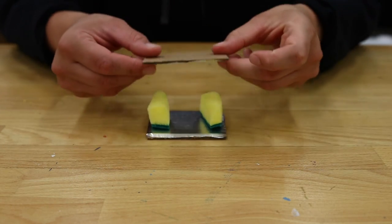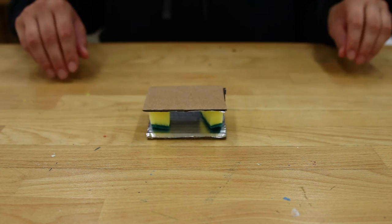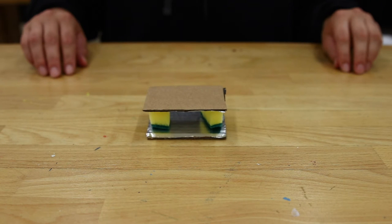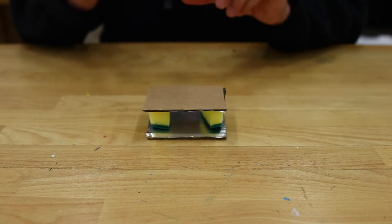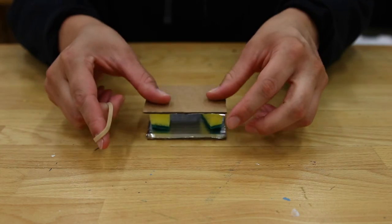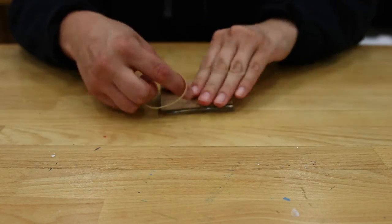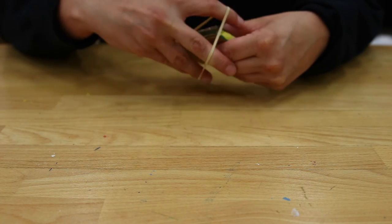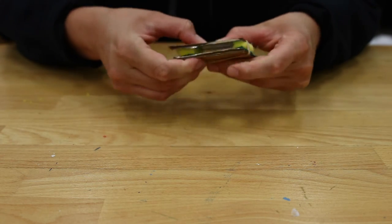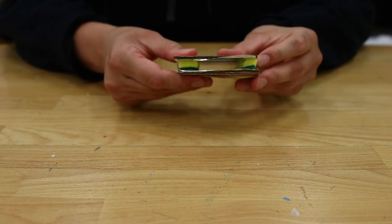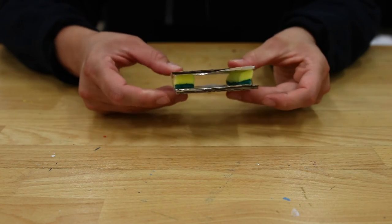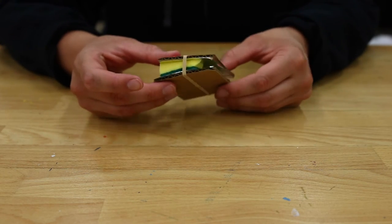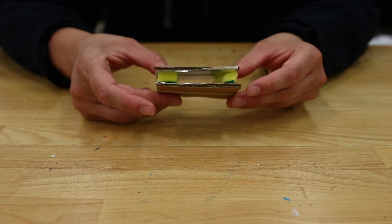Grab your second cardboard rectangle and place it on top of your sponges. Make sure the side with the aluminum foil is facing in towards the sponges. Then grab a rubber band and wrap it all the way around your cardboard sponge sandwich. As much as possible, try to keep your sponges towards the outer edges so that there's a gap in the middle.